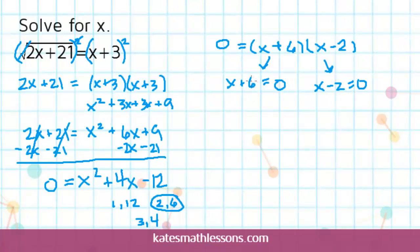And these are pretty straightforward equations to solve for x. So I can just subtract 6 from both sides and I get negative 6 for one possible answer, and then I can add 2 to both sides to get positive 2 as the second answer.